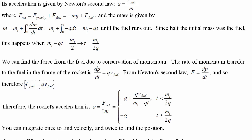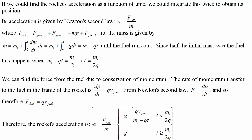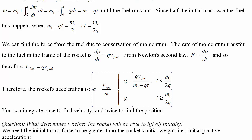Therefore, the rocket's acceleration is force over mass. Until it runs out of fuel, that's the gravitational acceleration plus the fuel force over mass. After the fuel runs out, it's just the gravitational acceleration. We can integrate once to find velocity and twice to find position.